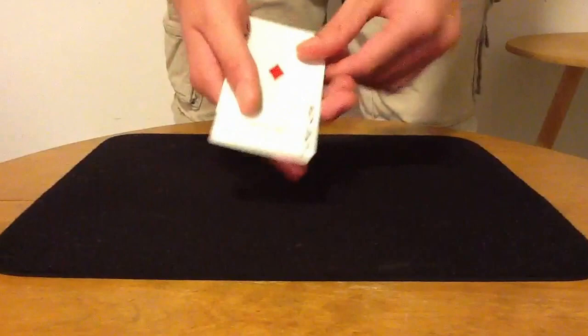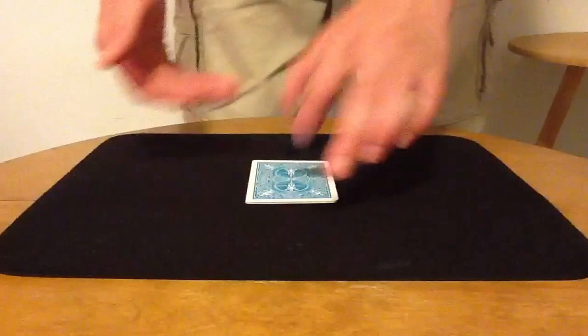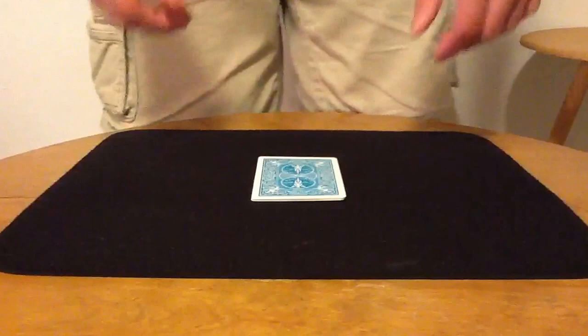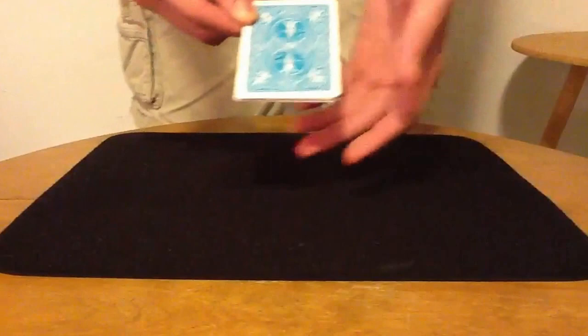So this is a little demonstration with the four aces. Now, the four aces are very universally known. When you ask anyone to think of cards, most often they will think or picture the four aces because they are just so universally known. And for that reason, magicians like to use them a lot for doing magic.